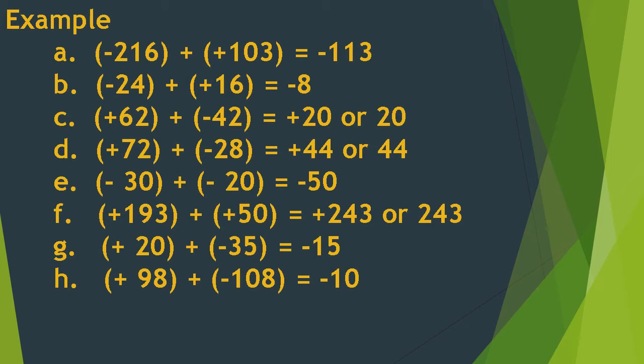Letter B: negative 24 plus positive 16 is equal to negative 8. Negative 24 is the greater number, so the sign is negative, giving us negative 8. Letter C: positive 62 plus negative 42 is equal to positive 20. The bigger number is 62, so the sign is positive.